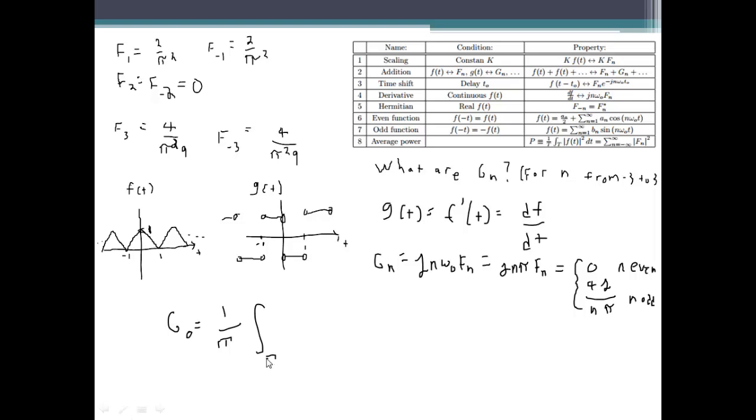So g of 0 equals 1 over the period, the integral over the period of g of t dt, which equals 1 half integral from minus 1 to 1 of g of t. Well if we just look at it, the integral over one full period of g of t is just 0 because you have an area of 1 up here and an area of minus 1 down here and it just cancels out. So in this case our g of 0 equals 0.